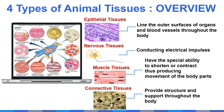Epithelial tissues cover the outside of the body and line organs and cavities within the body. Nervous tissue functions in the transmission of impulses. The tissue responsible for nearly all types of body movement is muscle tissue. Major functions of connective tissue include binding and supporting, protecting, insulating, storing reserve fuel, and transporting substances within the body.